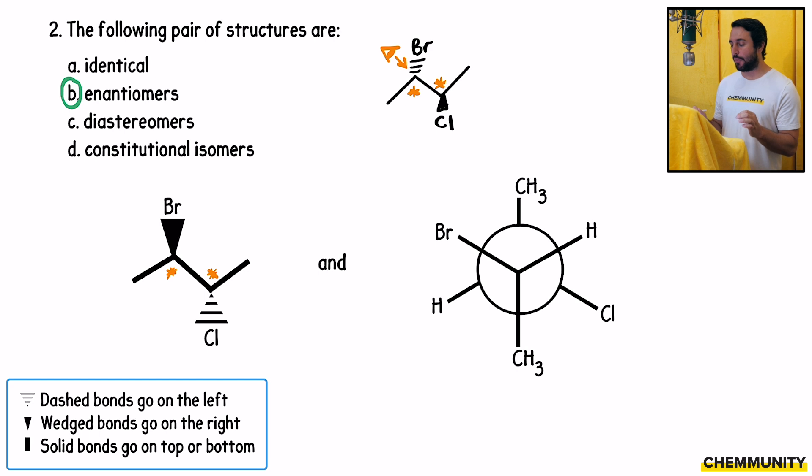Once again, if we had inverted the stereochemistry at only one of the stereocenters and not the other one, that would be diastereomers. And then it can't be constitutional isomers because all of the connectivity is the same. If we had moved the chloro group, let's say, to the terminal carbon instead of the second one, then that would be a different constitutional isomer. But these are clearly stereoisomers, and in this case, they are enantiomers.